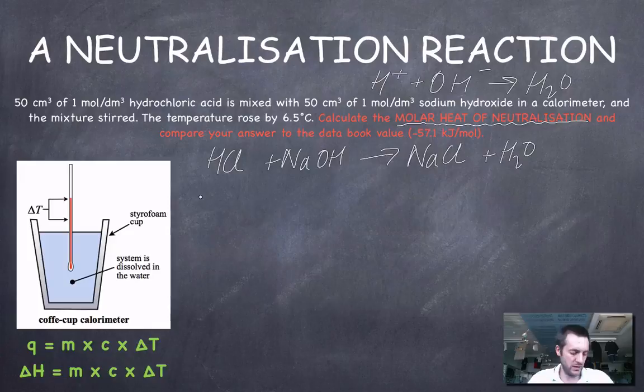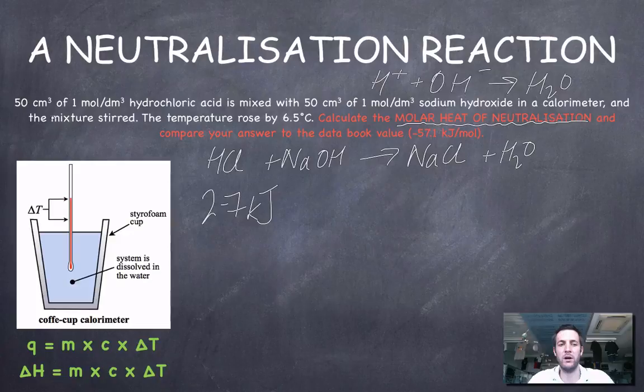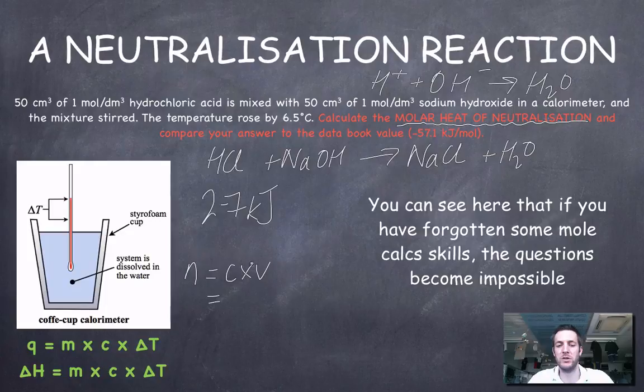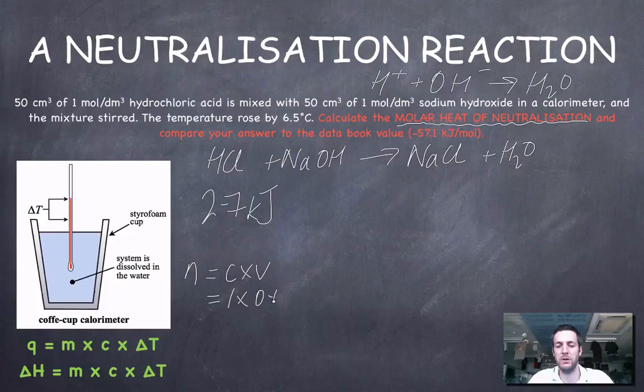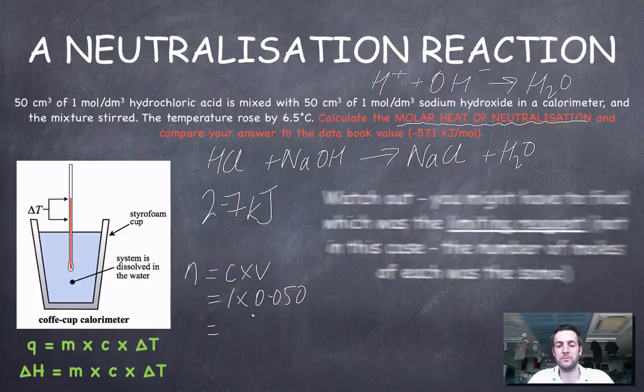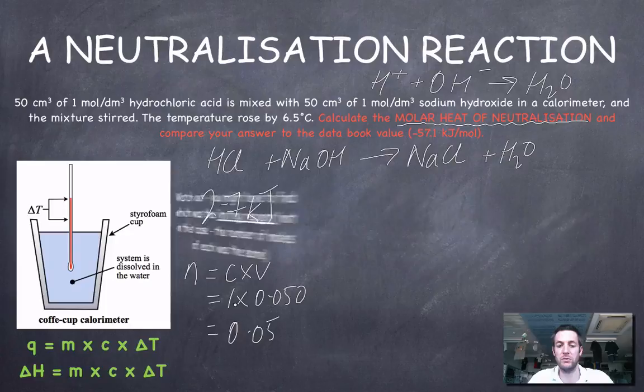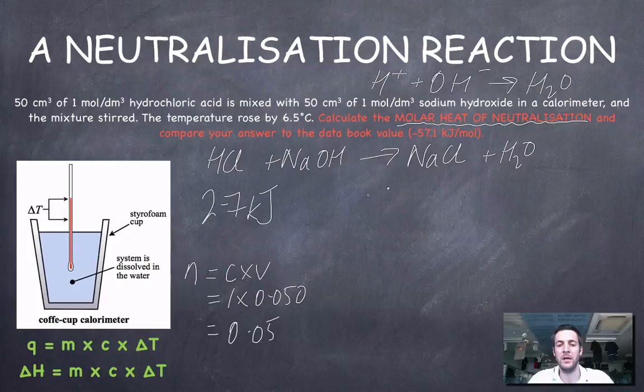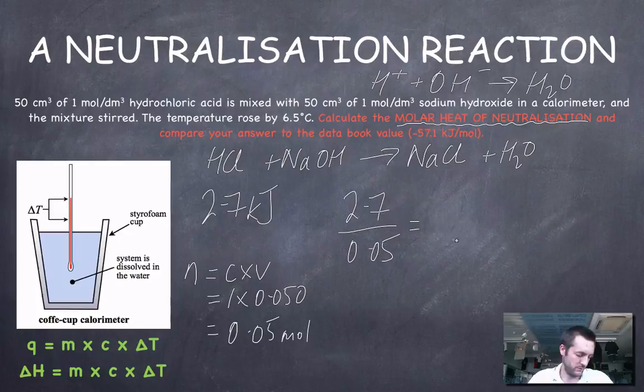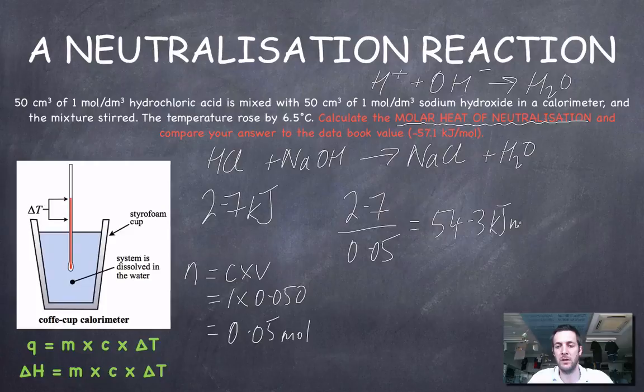Bearing in mind that my heat change was 2.7 kJ, this was released when I mixed this quantity of HCl with this quantity of sodium hydroxide. I can use these volumes and concentrations to find the number of moles, because the number of moles equals the concentration times the volume, which equals 1 times the volume, which has to be in dm³. So 1 times 0.05 equals 0.05 moles. I want a value in kilojoules per mole. So I'm going to take the kilojoules and divide it by the moles. So 2.7 over 0.05 equals 54.3 kilojoules per mole.